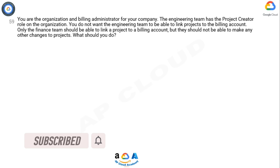Question. You are the organization and billing administrator for your company. The engineering team has the project creator role on the organization. You do not want the engineering team to be able to link projects to the billing account. Only the finance team should be able to link a project to a billing account, but they should not be able to make any other changes to projects. What should you do?